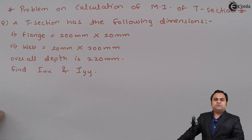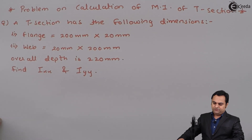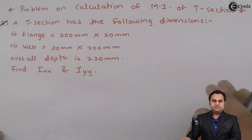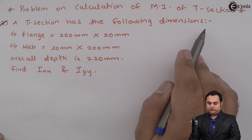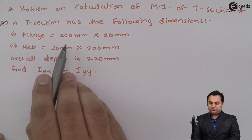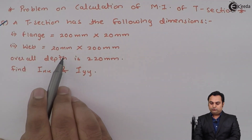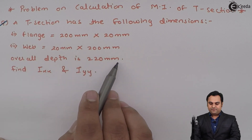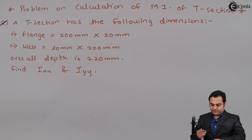Hello friends, in this video we will see a problem on calculation of moment of inertia for a T-section. The question gives a T-section with the following dimensions: flange 200 mm × 20 mm, web 20 mm × 200 mm, overall depth 220 mm. We have to find Ixx and Iyy.